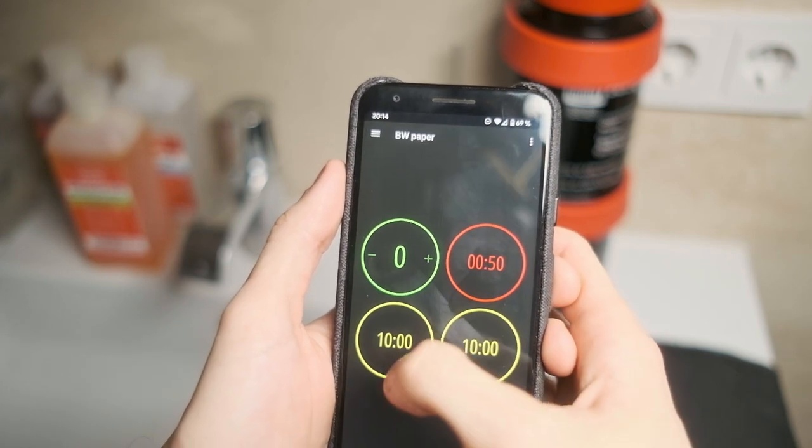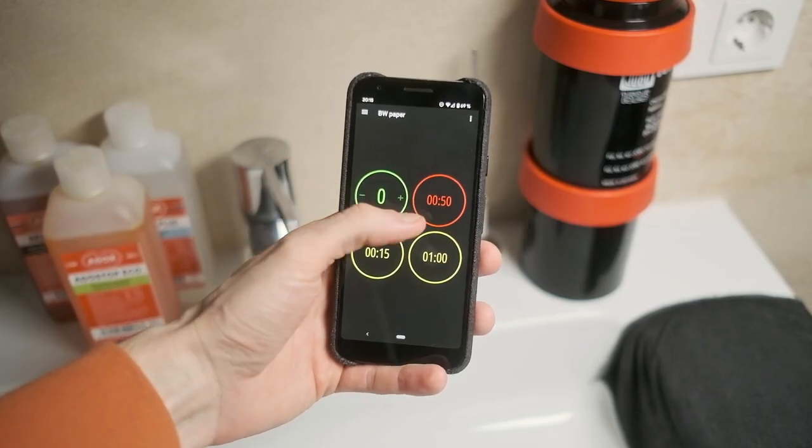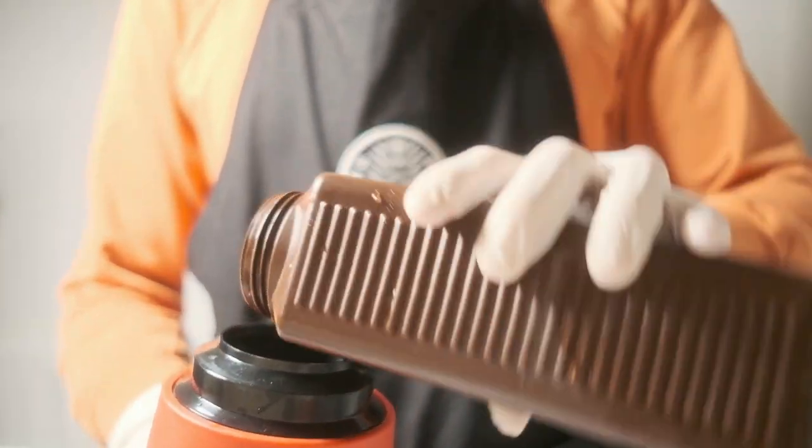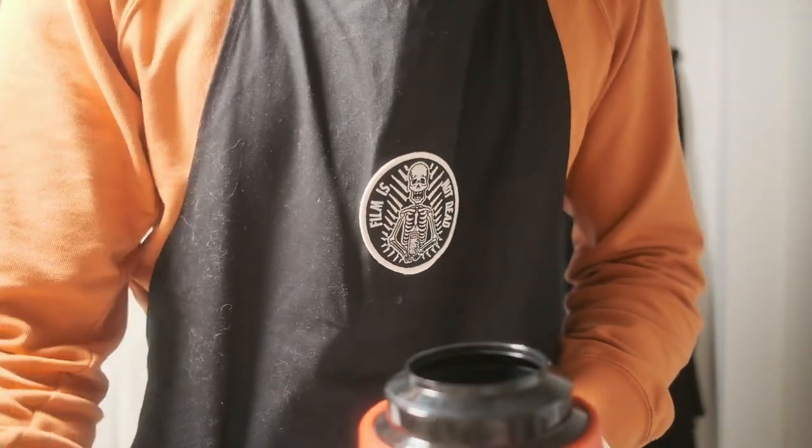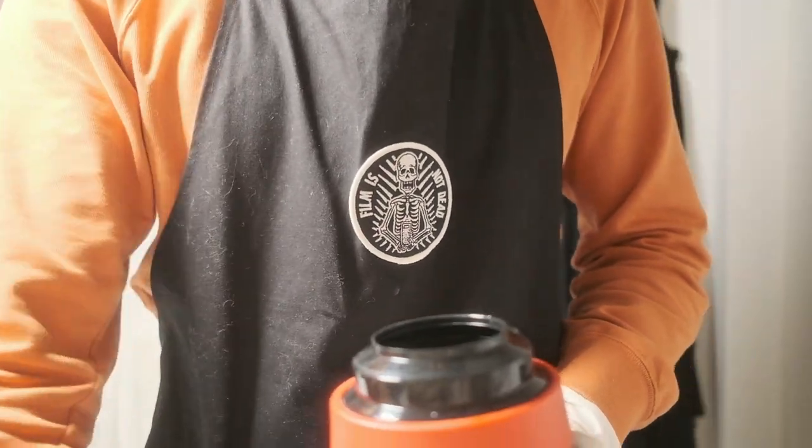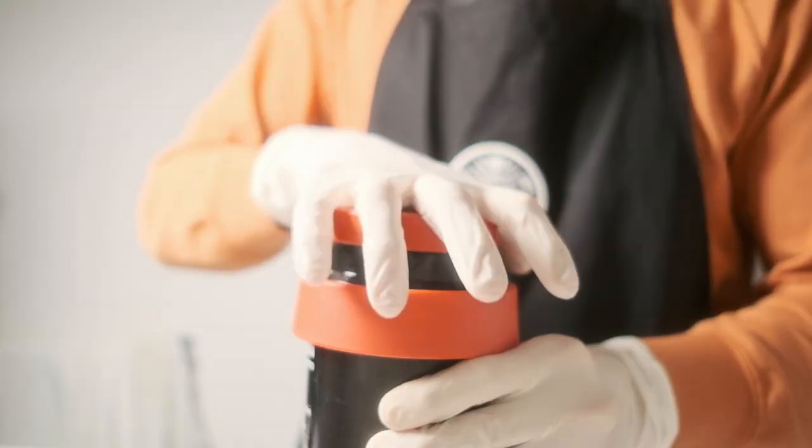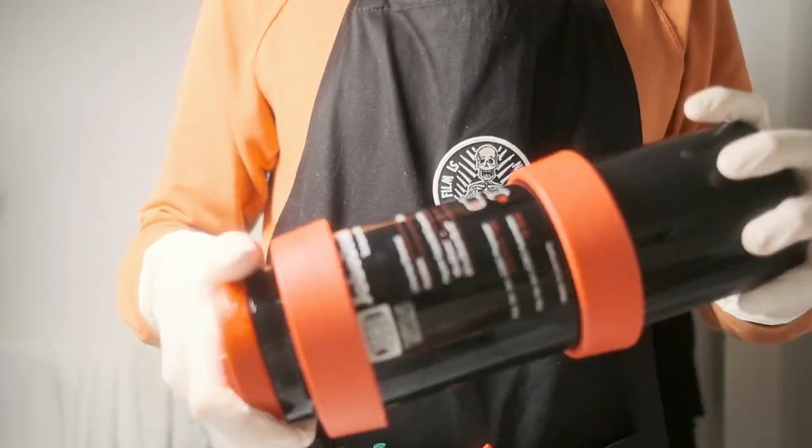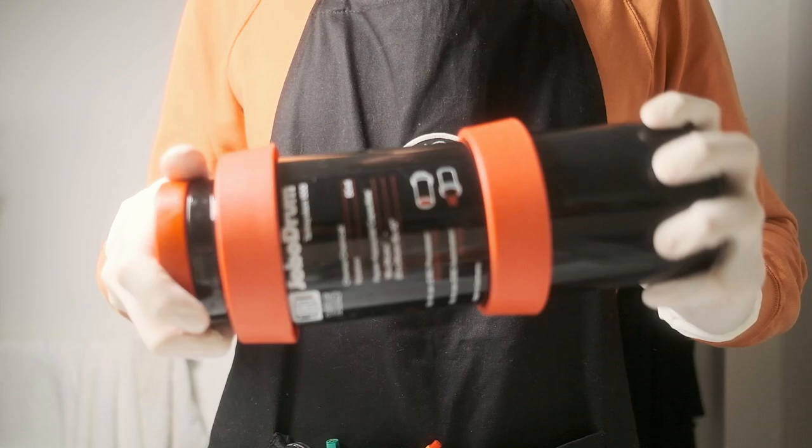So I usually set up for the new process the increment timer so basically I know how many papers I develop with this particular chemistry and I set up the time for each step and because I have a special cup in my yobo drum I can pour the chemistry close the lid and after it I just start the timer and rotate my drum for 90 degrees and the development of the paper starts.